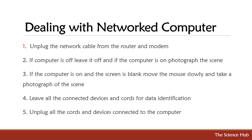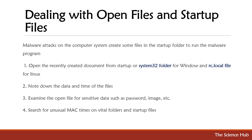Dealing with network computers: first unplug the network cable from the router and modem. If the computer is off, leave it off. If the computer is on, photograph the scene. If the computer is on and the screen is blank, move the mouse slowly and take a photograph. Leave all connected devices and cords for data identification, then unplug all cords and devices connected to the computer. Dealing with open files and startup files: malware attacks on a computer system create files in the startup folder to run the malware program. Open recently created documents from the startup or System32 folder for Windows, or the rc.local file for Linux. Note the date and time of the files, examine open files for sensitive data such as passwords and images, and search for unusual MAC times on vital folders and startup files.